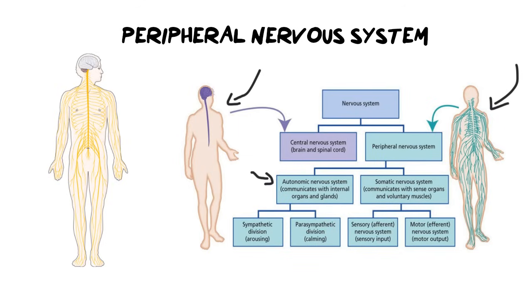We'll start with the somatic nervous system, as it's the easier one. Somatic means body, and it refers to the nervous system communicating with your sense organs and your voluntary muscles. So the somatic nervous system covers things like moving your eyes or walking — it touches on both the sensory part and the motor, which is the movement part.